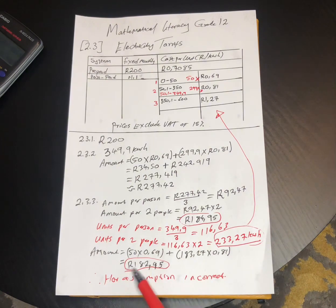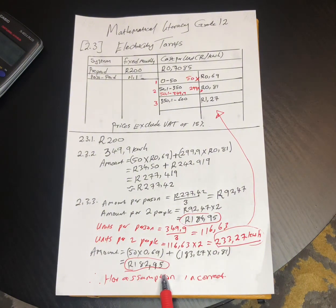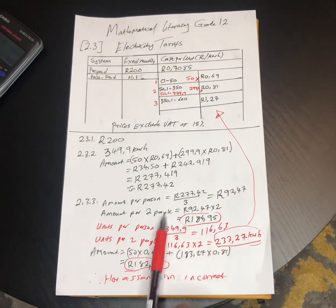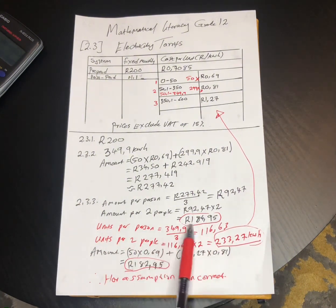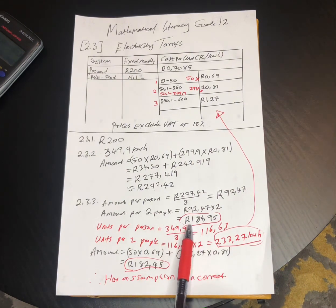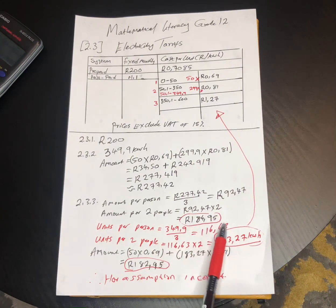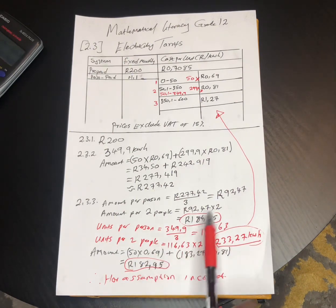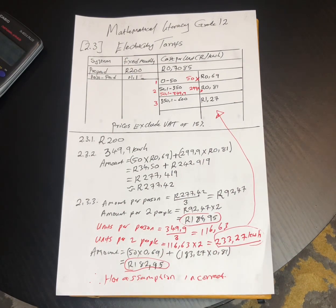To summarise: the actual amount two people will pay is R182.95. The claimed two-thirds amount was R184.95. These answers are not the same, so the assumption is incorrect.